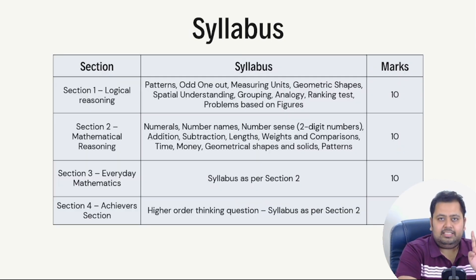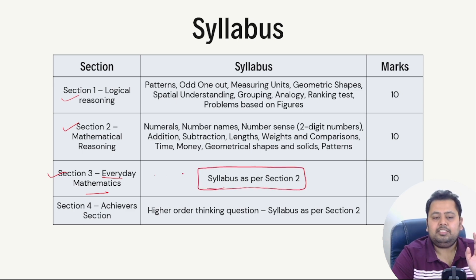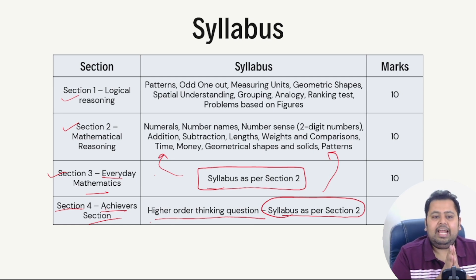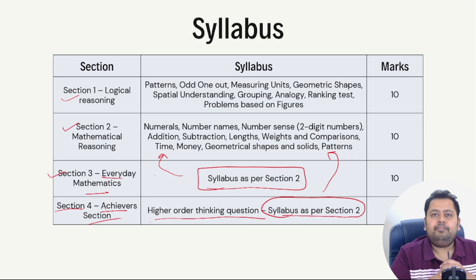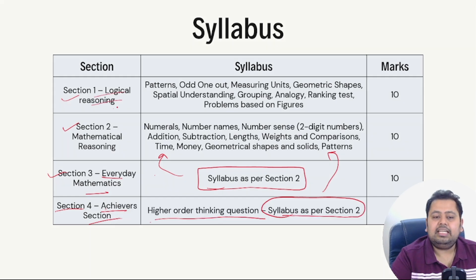Now let's cover the syllabus. There are four sections: Section 1 is Logical Reasoning with 10 questions, Section 2 is Mathematical Reasoning with 10 questions, Section 3 is Everyday Mathematics with 10 questions, and Section 4 is the Achiever Section with higher-order thinking questions. Sections 3 and 4 follow the same syllabus as Section 2, with Section 4 questions carrying 2 marks each.